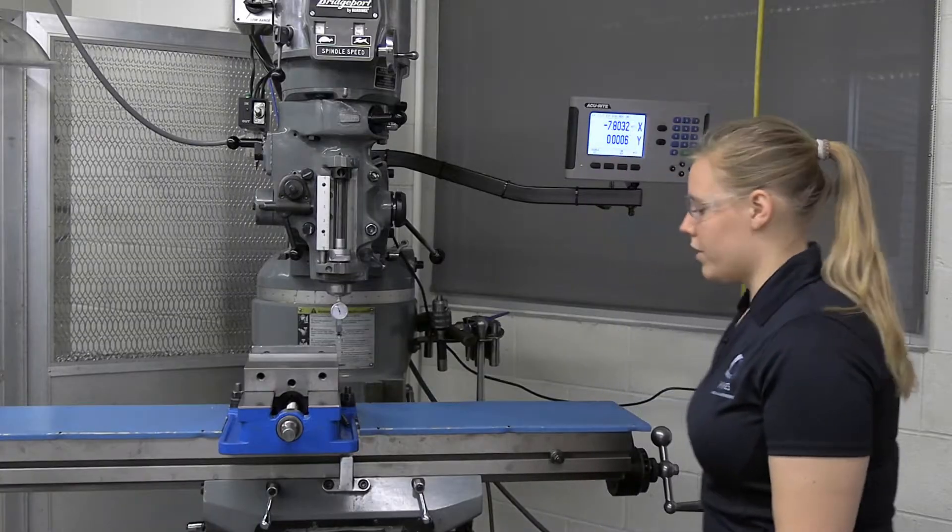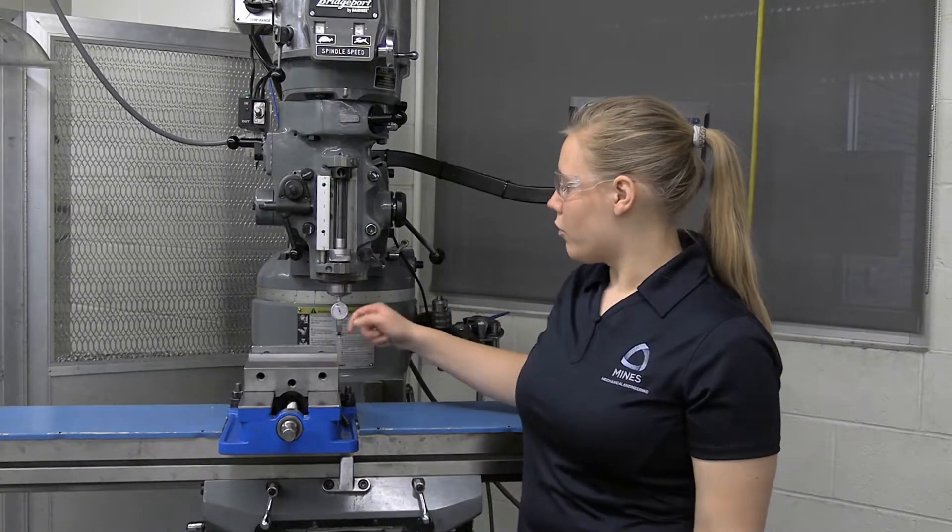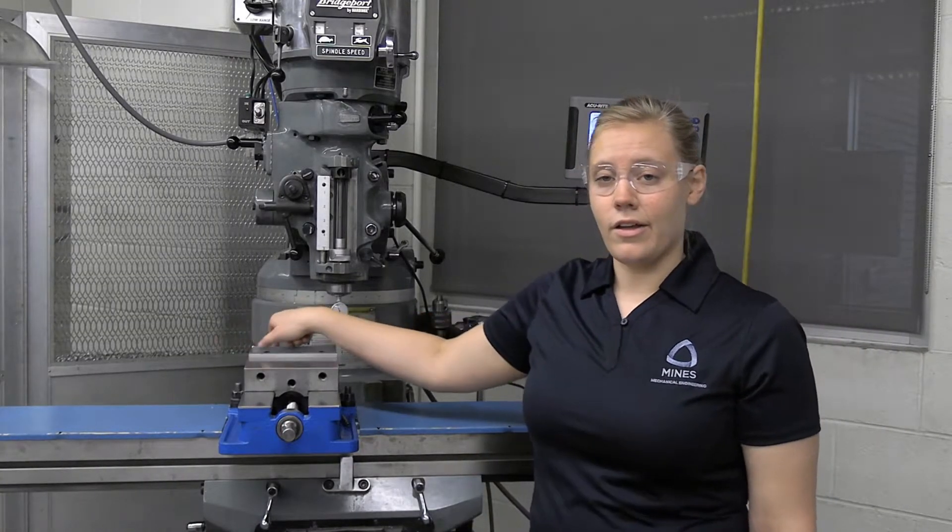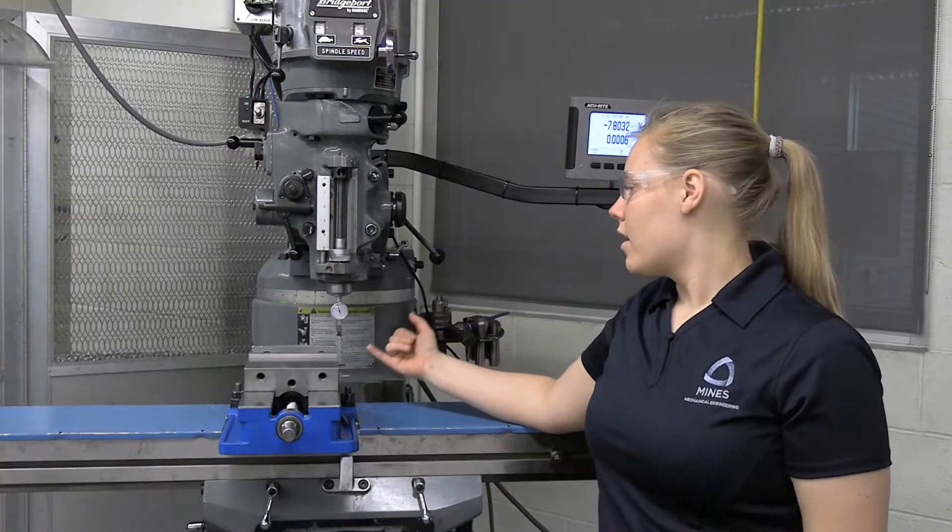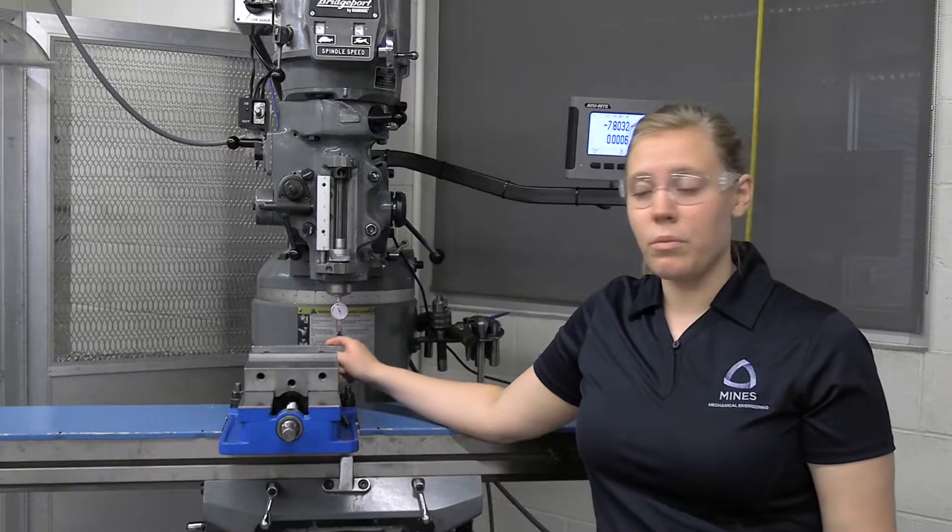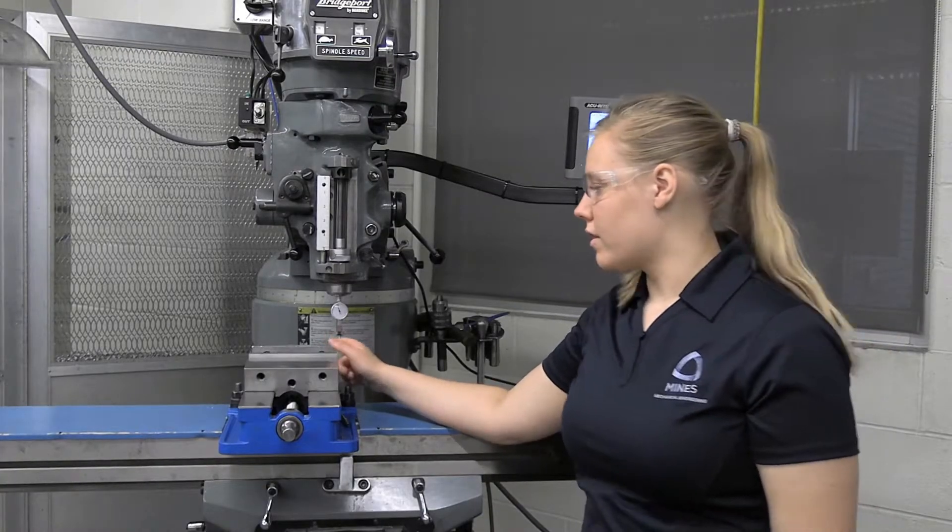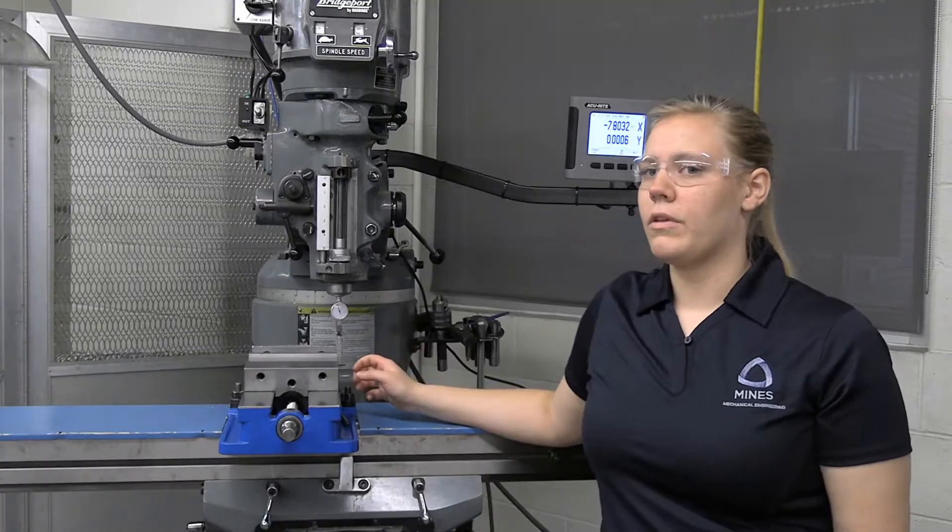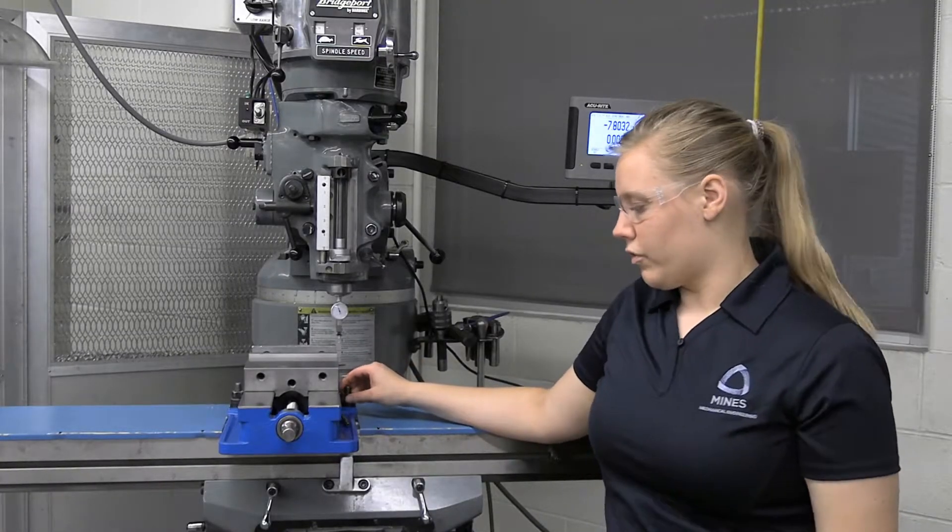To check alignment, I'm going to use my feeler gauge along the back edge of my vise. This is because this is the most perfect, least chewed up part of the vise that doesn't move, unlike this one, and it's going to give us the best results.